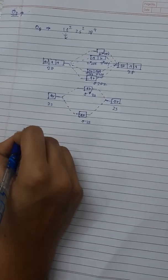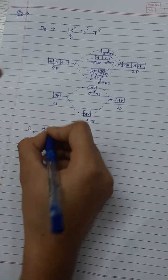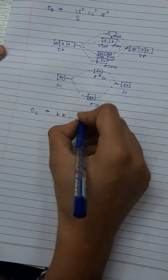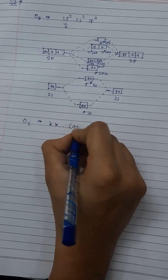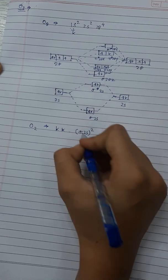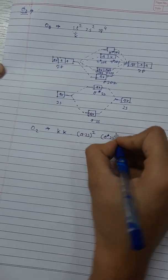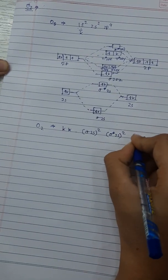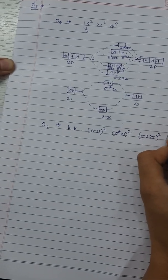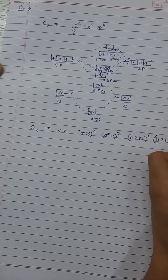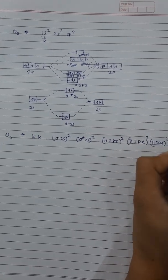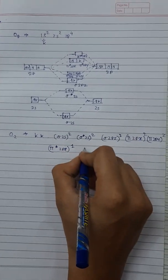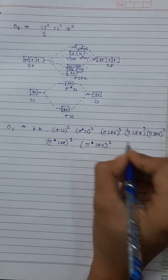The electronic configuration for O2 is: KK, sigma 2s (2 electrons), sigma star 2s (2 electrons), sigma 2pz (2 electrons), pi 2px (2 electrons), pi 2py (2 electrons), pi star 2px (1 electron), pi star 2py (1 electron). The two unpaired electrons in the pi star orbitals explain the paramagnetism of oxygen.